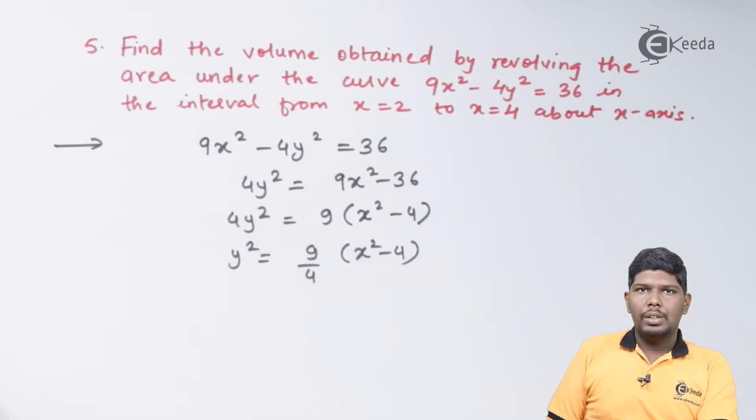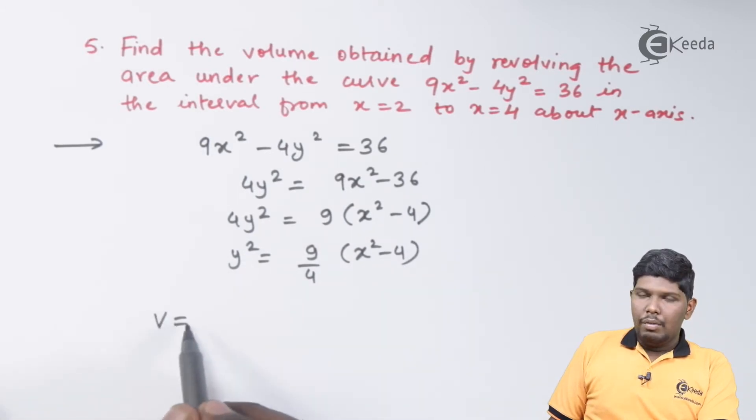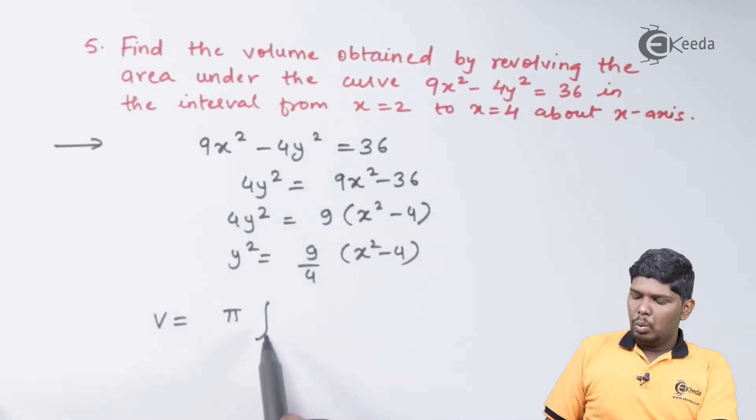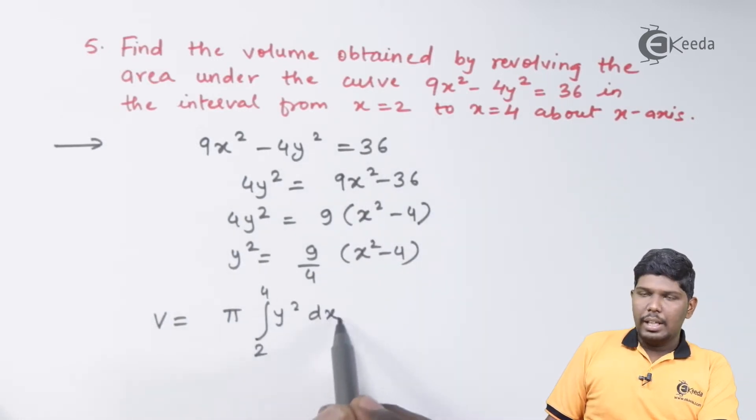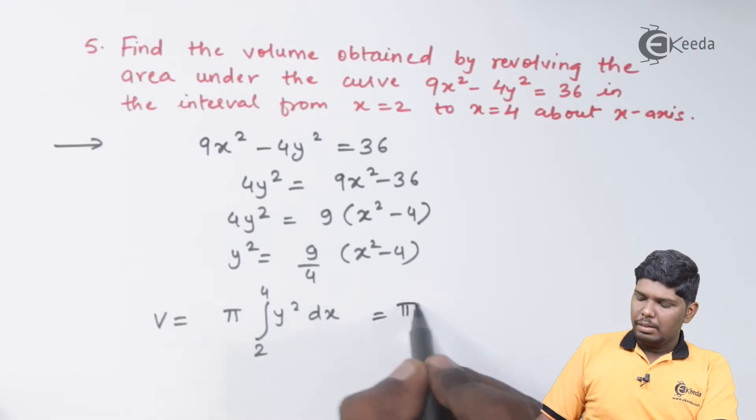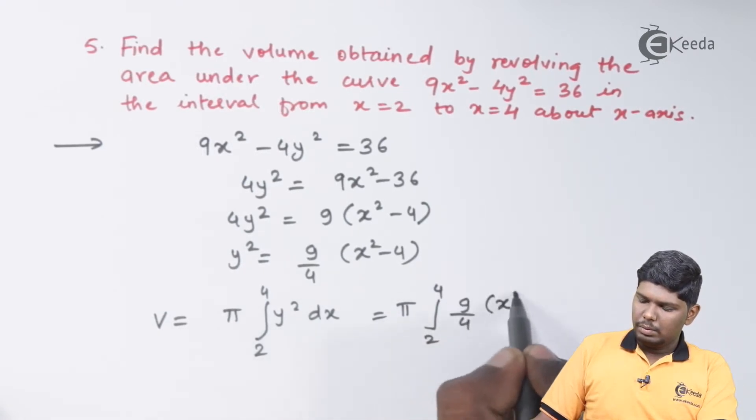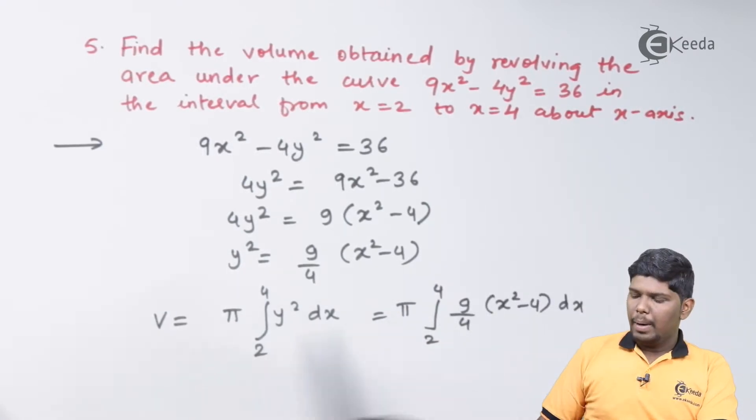We have volume as π times integral limit of x are 2 and 4, y² dx. This will give you π times integral 2 to 4, 9/4(x² - 4) dx. Now taking 9/4 constant outside the integral.